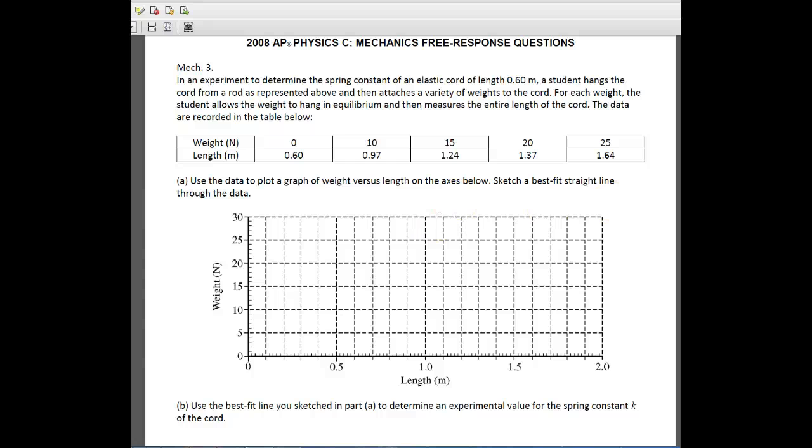Hey, this is Horner, and we're looking at 2008 AP Physics C Mechanics, question number three. On this one, we've got an elastic cord. Its length L is 0.6 meters.